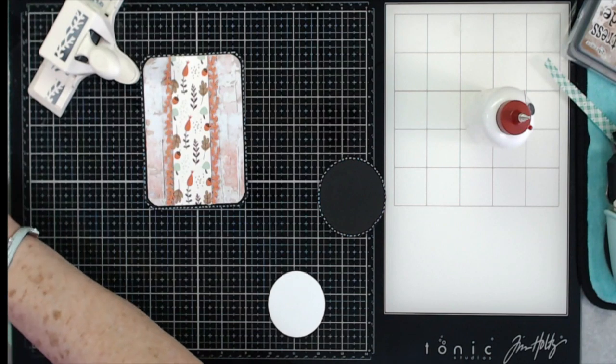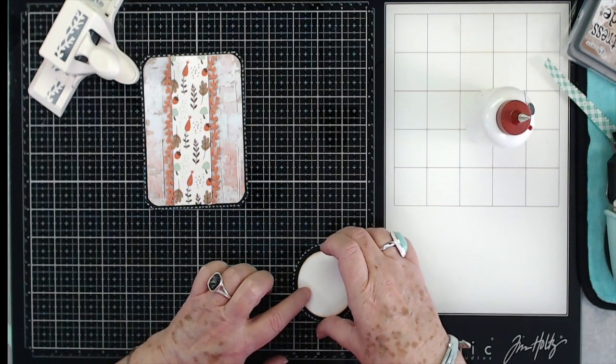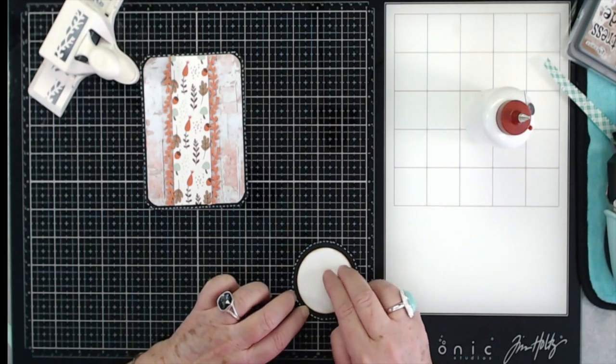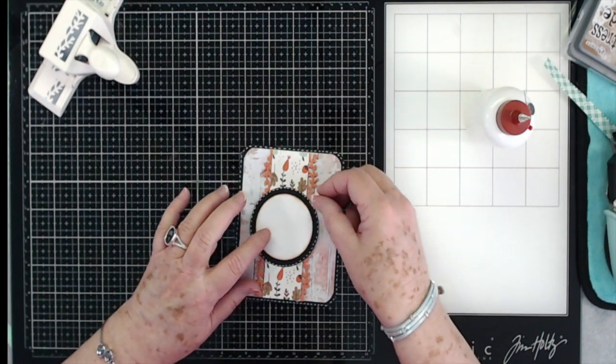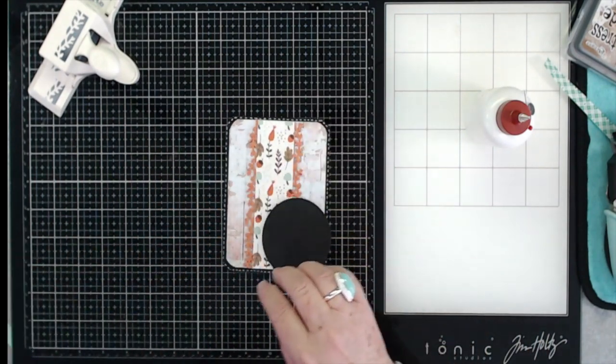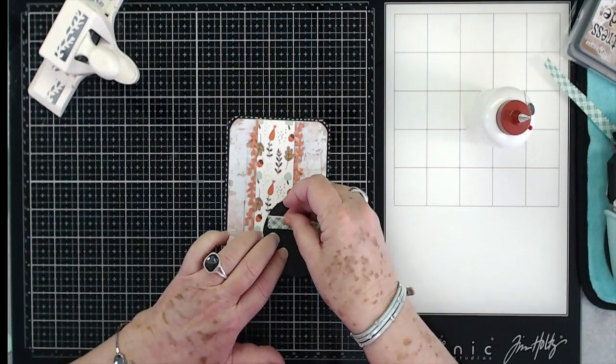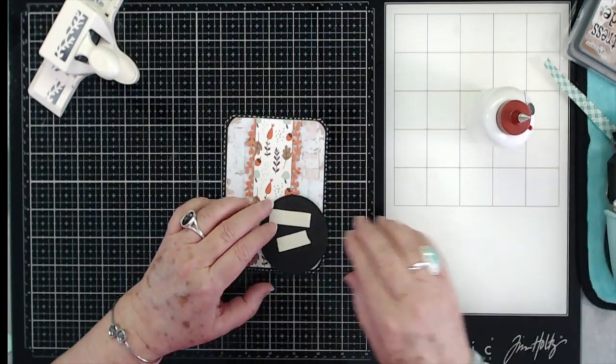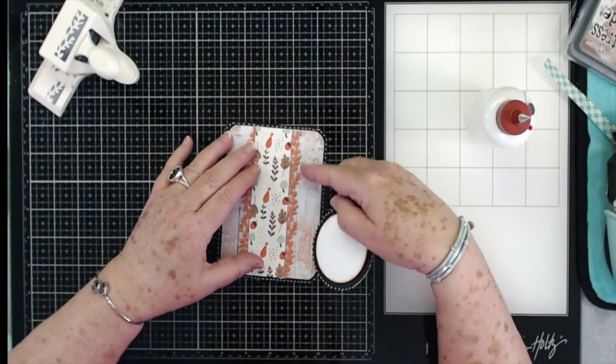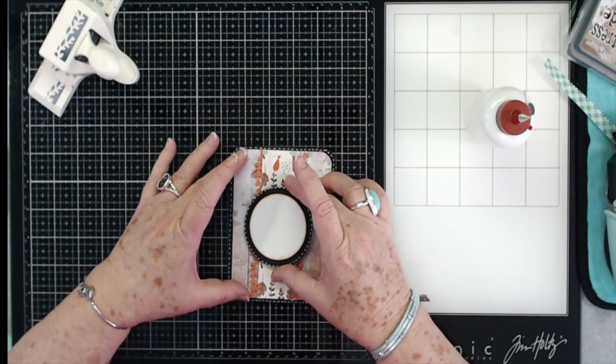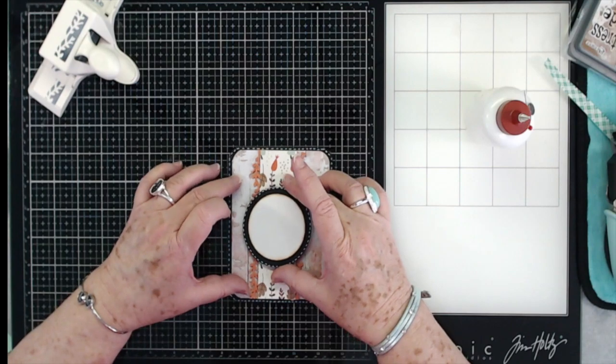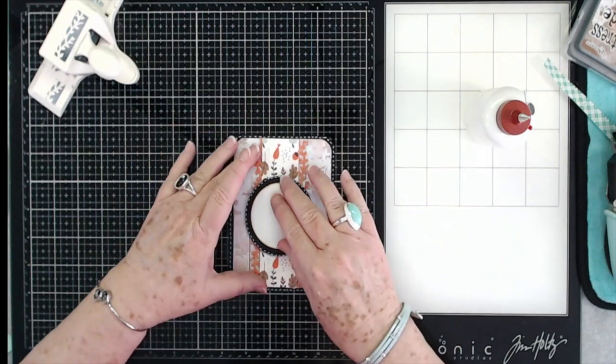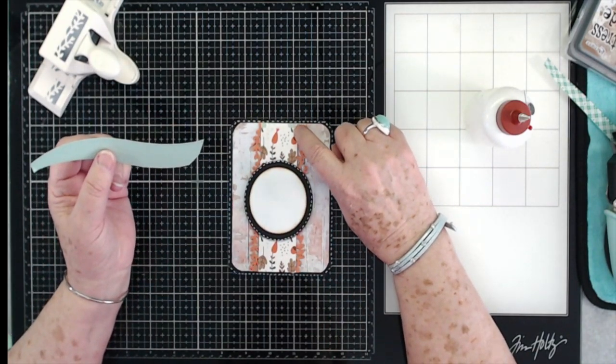That's what we did, and then I'm going to put this up on some foam tape as well. We're going to put that right in the center, right there. Okay, and then this is going to go right there. Again, foam tape. Can you tell I love my foam tape? I love to put dimension on cards. To me, it just makes a plain card look a lot better when you put dimension on it. Alright, so we are going to try to center that up right there, and look at that, that looks pretty good.